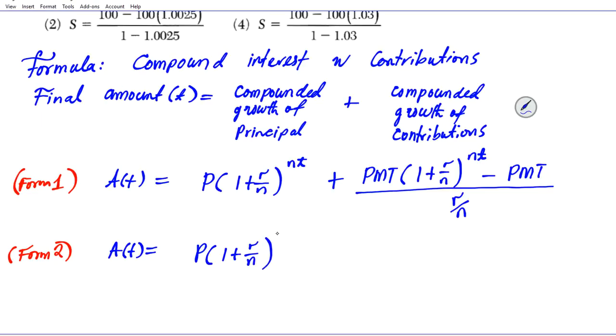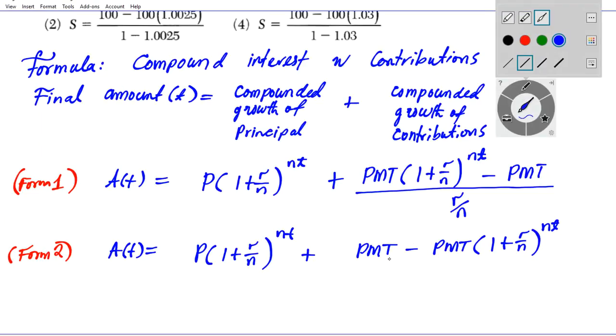The compounded growth of the principal component remains the same. We're going to alter the second part slightly. This can also be written as PMT minus PMT(1 + r/n)^(nt).